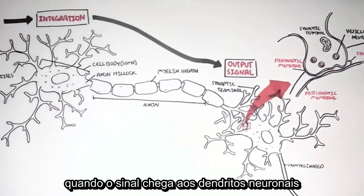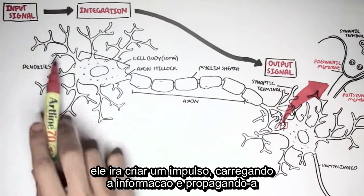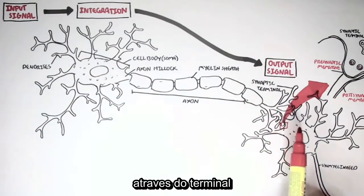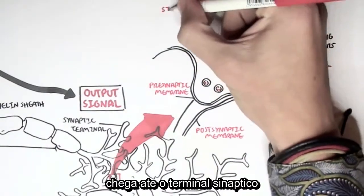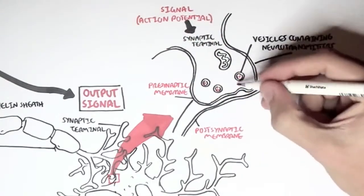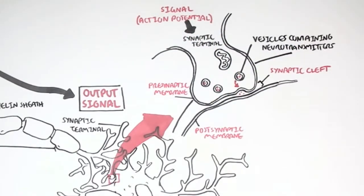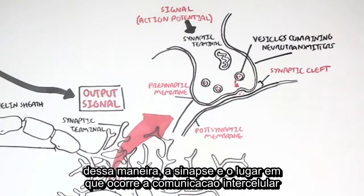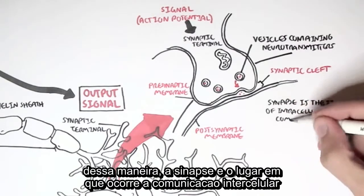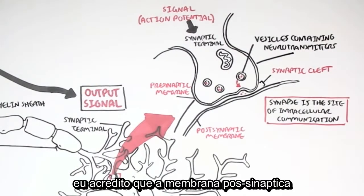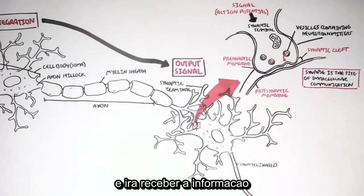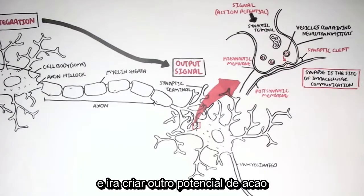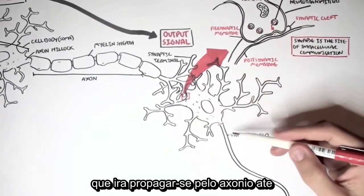When a signal arrives at the dendrites of the neuron, it will create an impulse that will carry this information and propagate it towards the terminal. This impulse is an action potential. Once the action potential arrives at the synaptic terminal, it will cause the vesicles to release the neurotransmitters into the synaptic cleft, where the neurotransmitters will then bind onto the post-synaptic membrane. So we can say that the synapse is the site for intercellular communication. The post-synaptic cell will receive this information and create another action potential that will propagate along the axon towards the synaptic terminal.